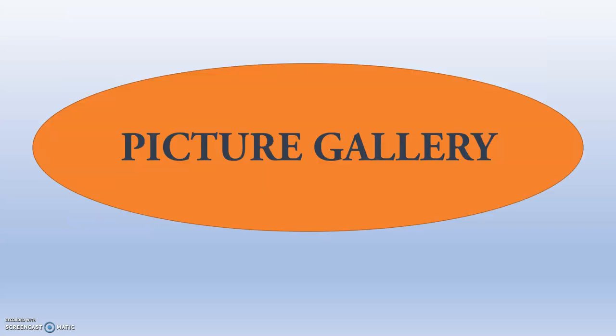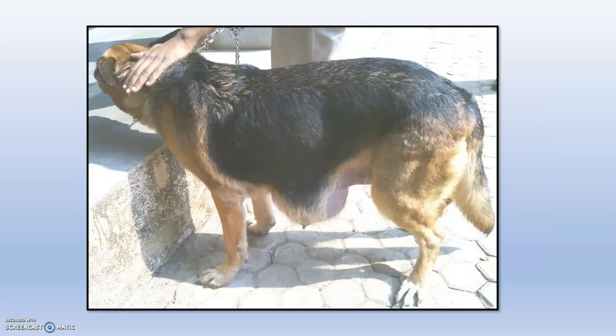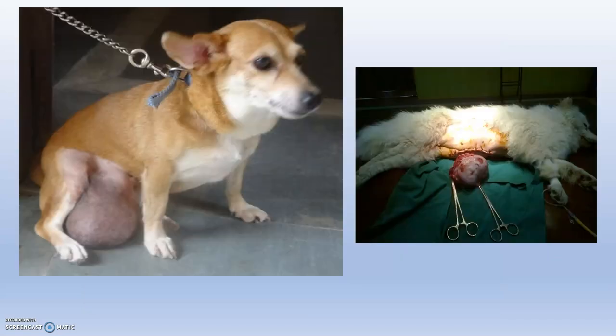Moving to the picture gallery of canine mammary tumors: mammary tumors can vary in size, structure, and shape according to estrogenic effects. Here you can see a German Shepherd with a mammary tumor, along with the resected mammary tumor specimen.